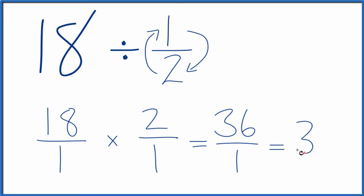Now when we're multiplying fractions, we multiply the numerators and then the denominator, and that gives us our answer. 18 times 2 is 36. 1 times 1 is 1, and we can call 36, that's just 36, because 36 divided by 1, that's 36.